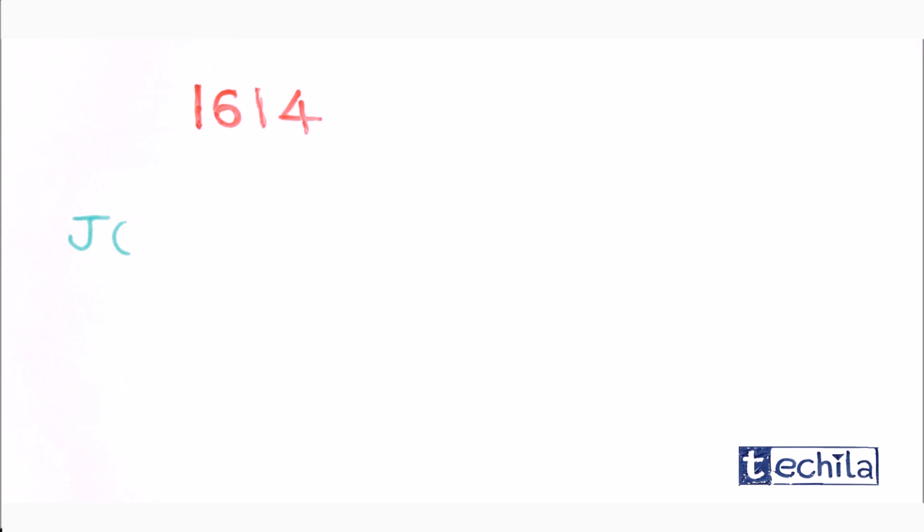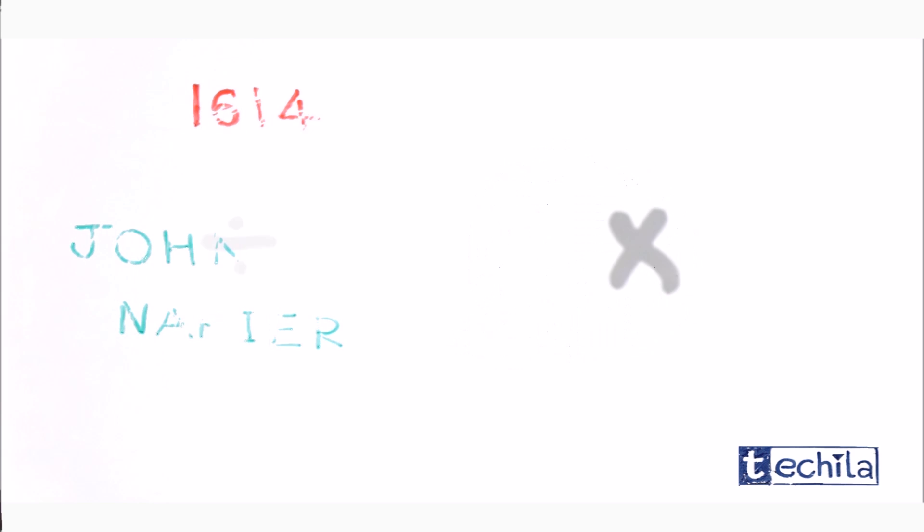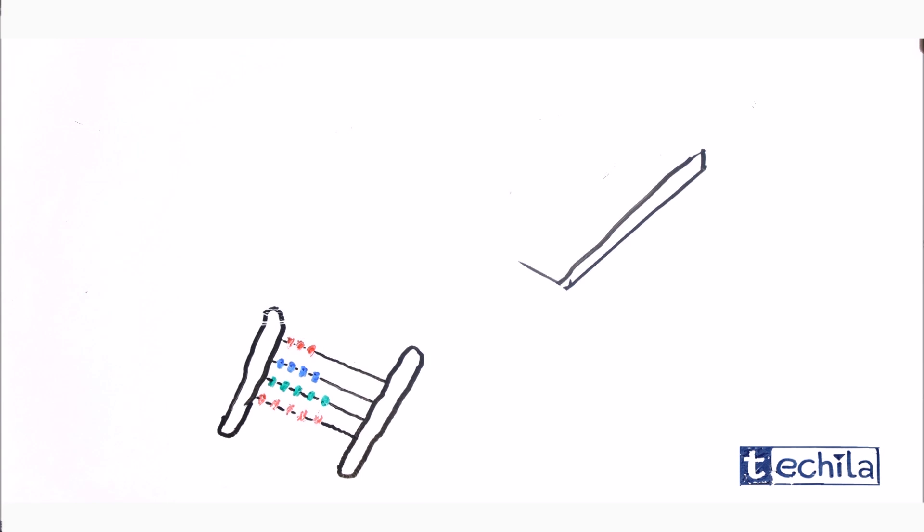Back in 1614, a Scottish mathematician named John Napier invented logarithms in the need to simplify mathematical calculations. The objective was to simplify multiplication and division to the level of addition and subtraction.